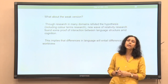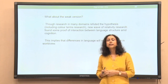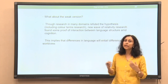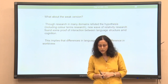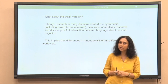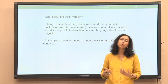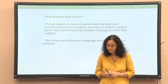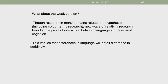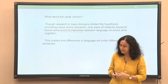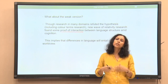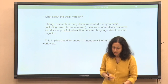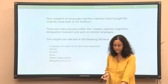What about the weaker version? The weaker version claims not that language decides the way we think, but that there is a relationship, an amount of influence. Though research in many domains has refuted the strong hypothesis, there is a new wave of research that provides some proof in support of the weaker version — proof of interaction between language and thought. This is about interaction, not determination. There is an impact of the language we speak on the way we think, apparently.